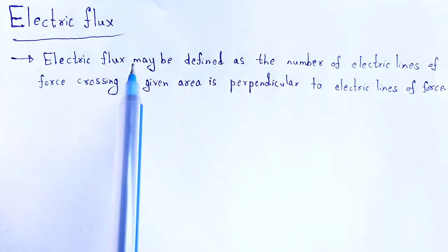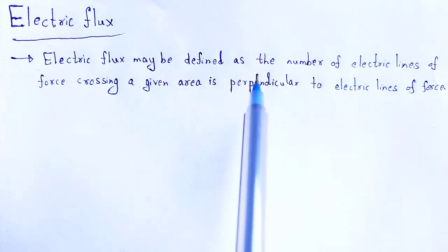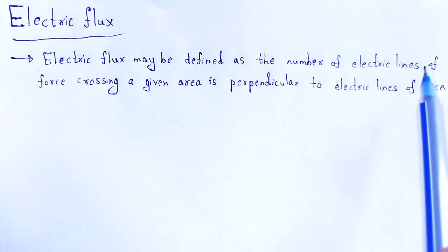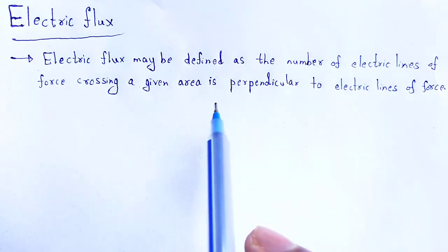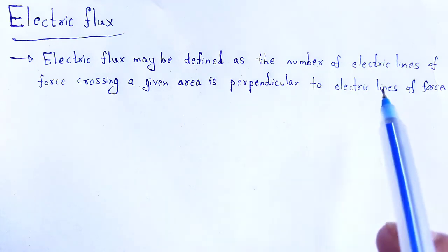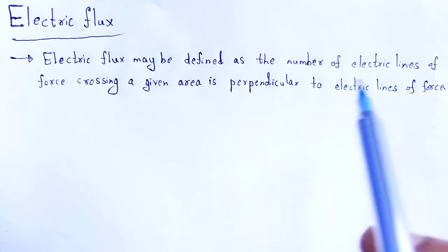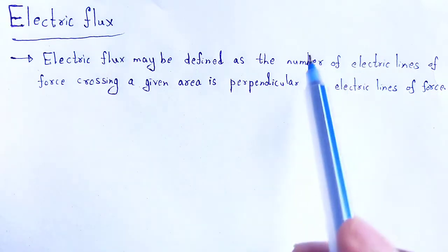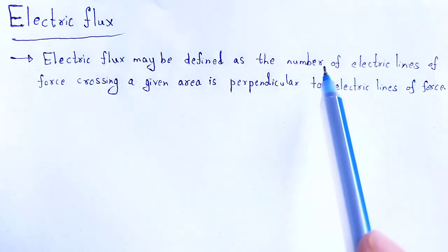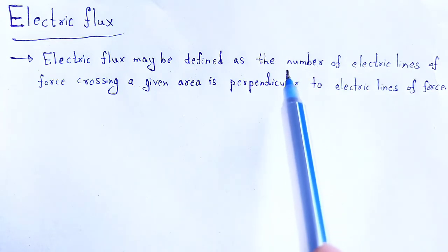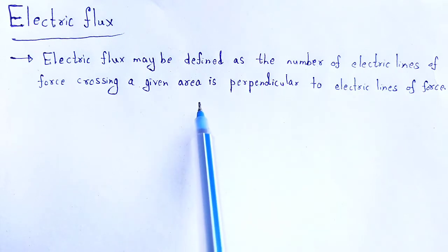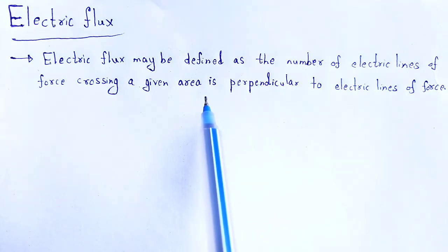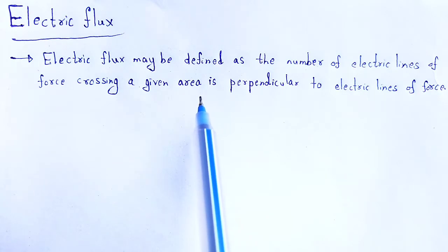Electric flux may be defined as the number of electric lines of force crossing a given area which is perpendicular to the electric lines of force. Electric flux is the number of electric lines — how many electric lines of force pass through a particular given area, that area being perpendicular to the electric lines of force.